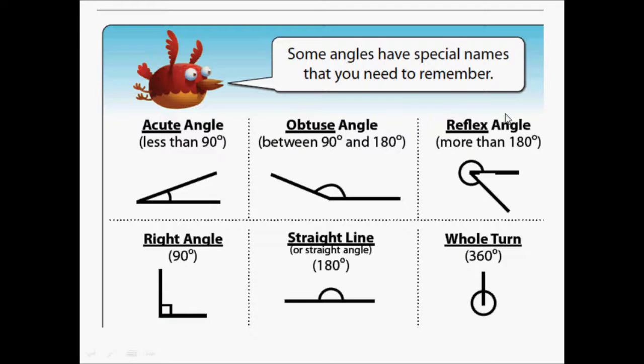So we have some angles that have special names that you need to remember. We have acute angle, less than 90 degrees. Obtuse angle, between 90 and 180 degrees. Reflex angle, more than 180 degrees. Right angle, 90 degrees exactly. A straight line angle, that is 180 degrees. Whole turn angle, that is 360 degrees.